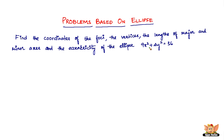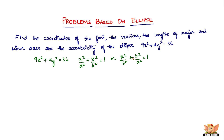The first question you might have is about the equation of the ellipse, because we've never seen an equation in this form — not in 9x² + 4y² = 36. We've seen it in the form of x²/a² + y²/b² = 1 or x²/b² + y²/a² = 1. What we need to do is convert this equation to that standard form. All we have to do is divide the entire equation by 36, since we need 1 on the right-hand side.